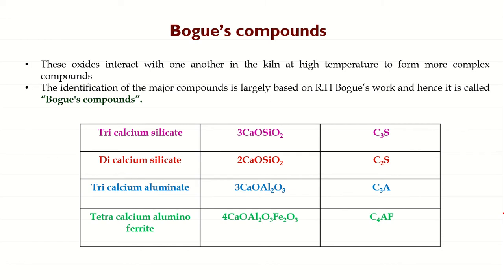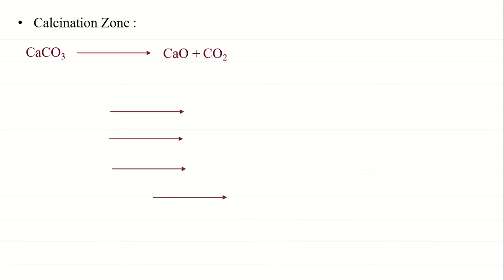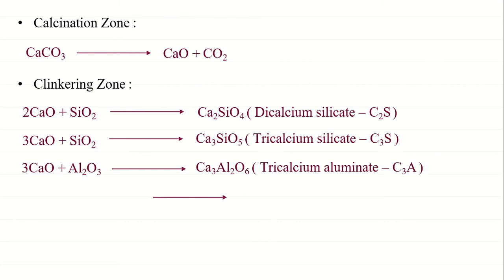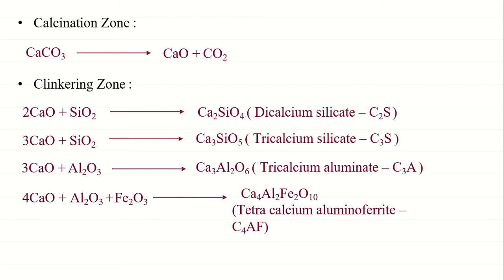In the calcination zone during the manufacturing of cement, calcium carbonate decomposes into calcium oxide and carbon dioxide, where carbon dioxide is sent out. In the clinkering zone, the oxides fuse together to form Bogue compounds. These are the chemical reactions, and you can see the four Bogue compounds which are formed.